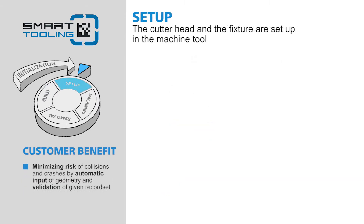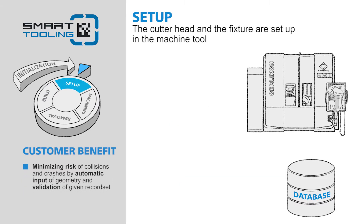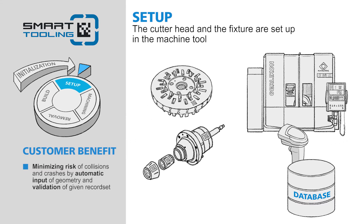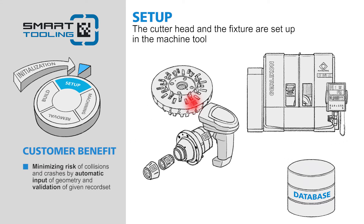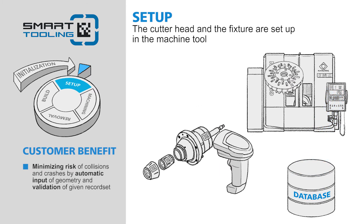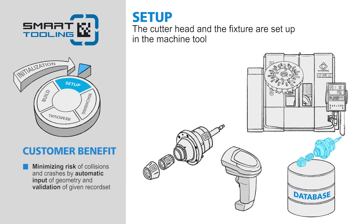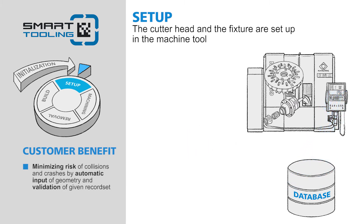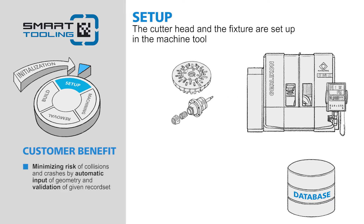Setup. The cutter head and the fixture are set up in the machine tool. The fixture and the tool are scanned at the machine during setup. When this is done, the machine takes over all of the geometry data of the digital twin with a push of a button. At the same time, the machine checks whether the cutter head and the fixture belong to the selected process data setup.